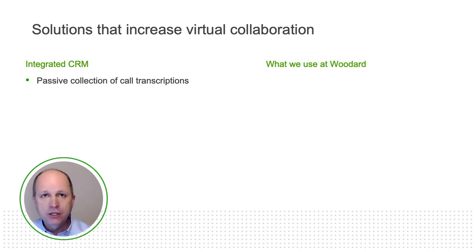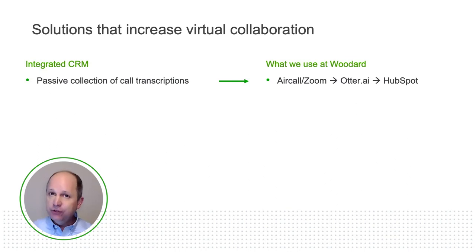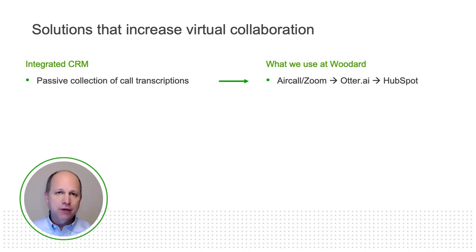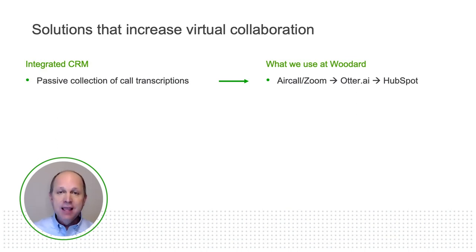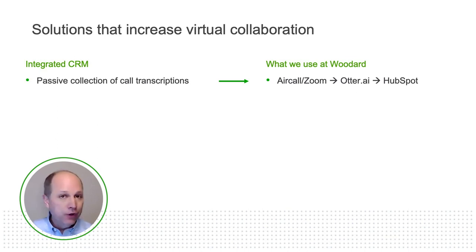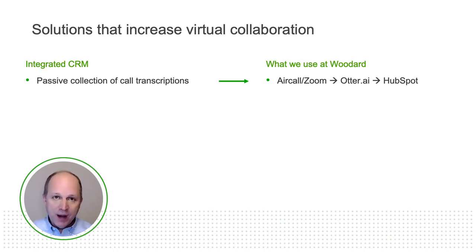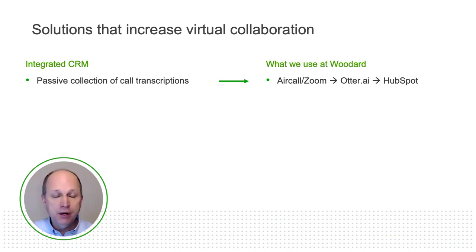At Woodard, we use a combination of Aircall for actual phone calls and Zoom for web meetings. Those are integrated with Otter AI, which transcribes those different voice feeds automatically, cloud to cloud, and then automatically sends those transcriptions to the proper HubSpot contact. How does it know? Zoom knows the email address; Aircall knows the phone number. As long as the phone number and email address are in the contact's record, Otter will find it and place it right in. If it can't find it, it will put it in a queue and tell us where to place it.